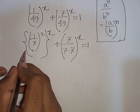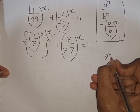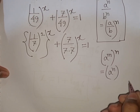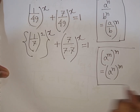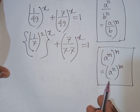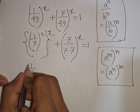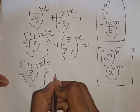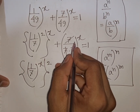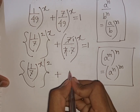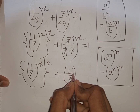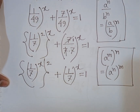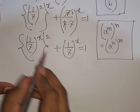Now we apply the exponential rule: a power m bracket to the power n equals a power n bracket to the power m. According to this rule, (1 over 7) bracket power x to the power of 2, plus (1 over 7) bracket to the power x, equals 1.